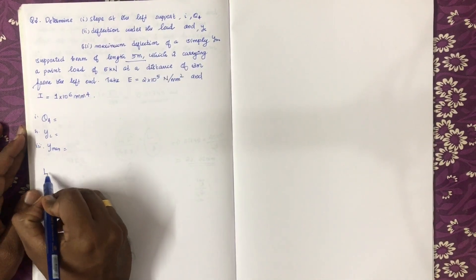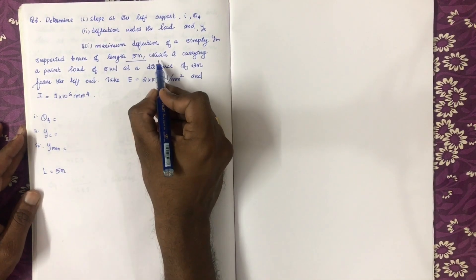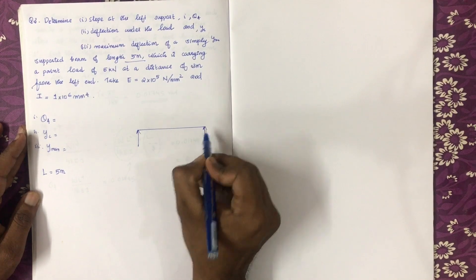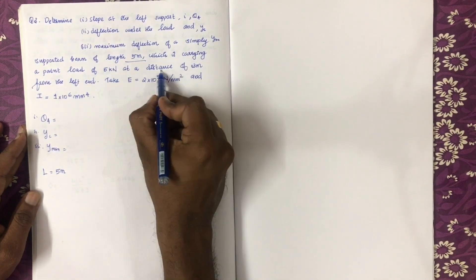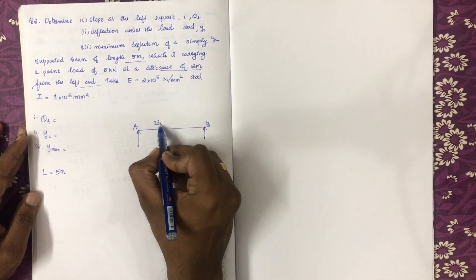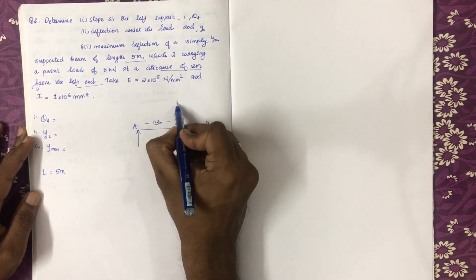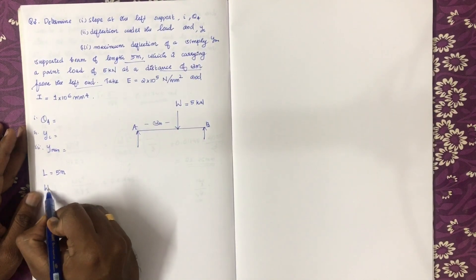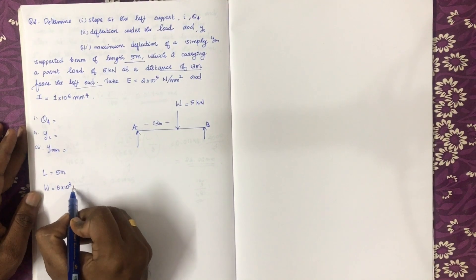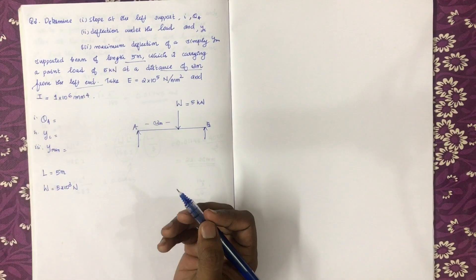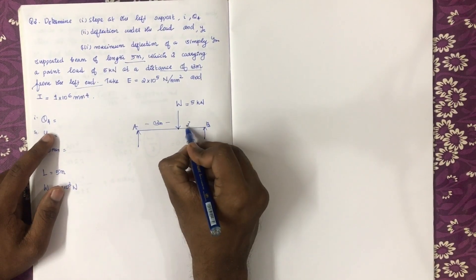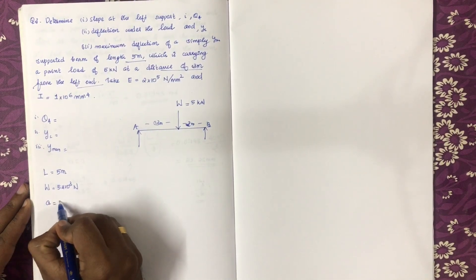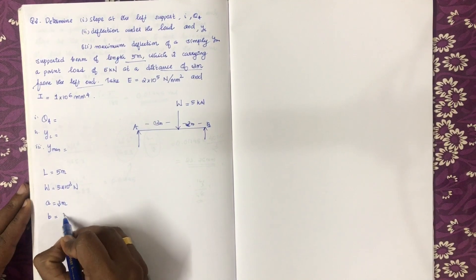L is equal to 5 meters, and the beam is carrying a point load of 5 kilonewtons. This length has values a and b. The load of 5 kilonewtons is at a distance of 3 meters from the left end. So a equals 3 meters and b equals 2 meters.